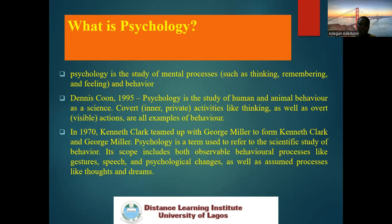Before the general definition, we have psychologists in the past who have given us several definitions of psychology, but we will be looking at two tonight. The first one is Denny Kuhn. According to Denny Kuhn, psychology is the study of human and animal behavior as a science. It talks about covert and overt behavior. Covert behavior refers to the inner behavior — those behaviors that we cannot physically see, that are hidden, that are private. Overt behavior refers to the visible actions that we can see — people express anger, people shout, they fight — those are visible actions.